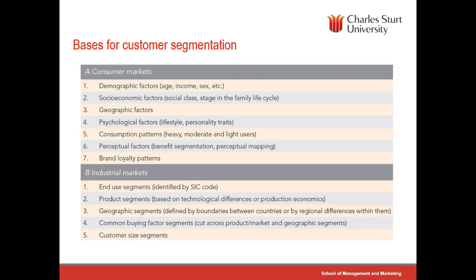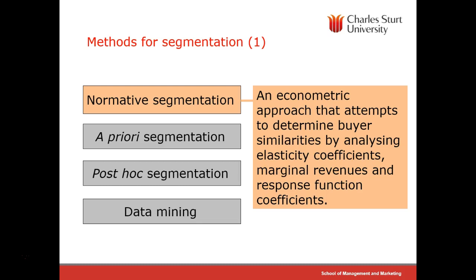What are some of the approaches we can take in segmentation? We can use a normative approach by analysing people's responsiveness to prices and marginal revenues. This is used by airlines and hotels to look at prices people will pay for different types of rooms or different classes of airfares — first class versus economy, premium economy.